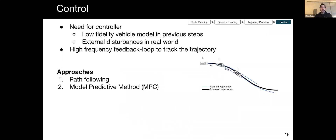Next, we talk about control. We have seen how the motion planner iteratively replans a trajectory that considers the latest information. Even though the trajectory may contain control commands, a controller is needed to track incoming trajectories and send actuation commands to the vehicle at high frequency. This is because the vehicle models used in the previous steps are simplified, and more complicated models would increase computational complexity. Furthermore, there are many external disturbances that can influence the vehicle's motion, so what is commanded may not be 100% achieved. Therefore, a high-frequency feedback loop is required to constantly recompute actuation commands based on the current state of the vehicle to track the trajectories.